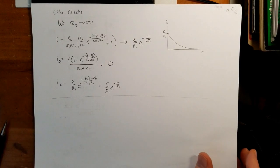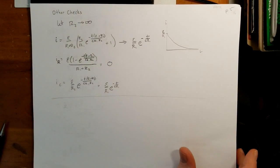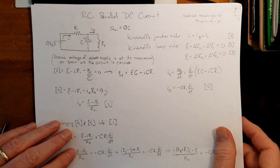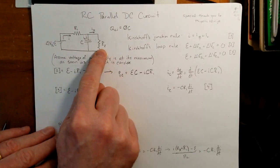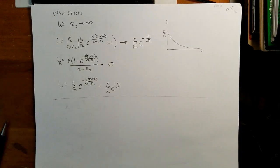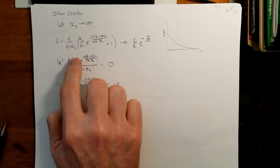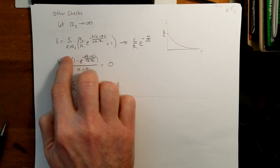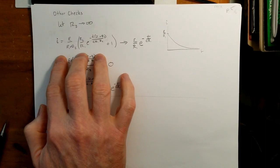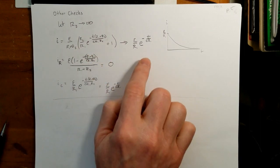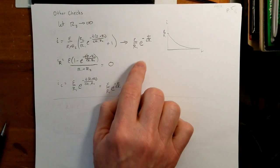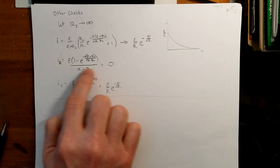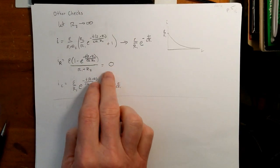And then another check is if we let R2 go to infinity, and recall that R2 is the resistor parallel to the capacitor, so if we let R2 go to infinity, we end up with, well, I take my equation for I, which we had done a couple pages earlier. It simplifies down into this, and so we end up with IR is equal to zero, which is what I would expect.